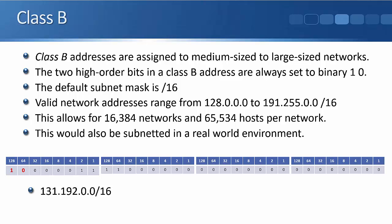Class A addresses default to a slash 8, which is the first octet. Class B subnet masks always default to a slash 16, which is the first two octets.